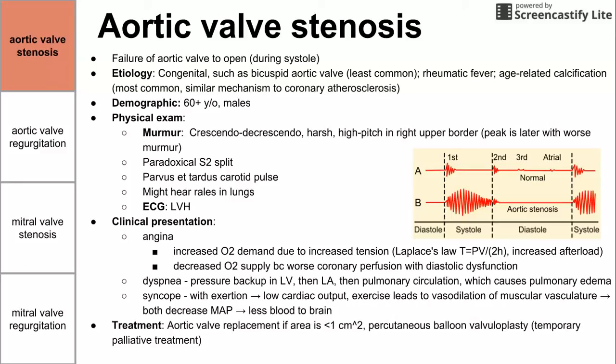Treatment for aortic valve stenosis is replacing the valve if the area of the valve gets less than one square centimeter. Normal is much bigger — four, five, or six. There's also percutaneous balloon valvuloplasty, which involves putting a balloon into the valve and breaking it open. This gives relief for about six months but relieves symptoms without solving the underlying problem.